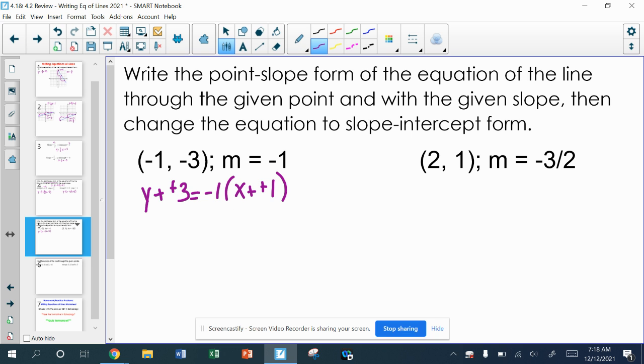To get slope-intercept, I have to distribute, and then I have to move the number that's with the y. So I have y plus 3. That's going to be a negative 1x. And negative 1 times 1 is just going to be a negative 1. I'm going to write it as plus a negative 1, just to be careful here. And to get rid of adding 3, I would subtract 3. So I have y equals negative 1x. This is a negative 1, plus a negative 3 is a negative 4. So you could say plus a negative 4, or you could just say minus 4, either way.